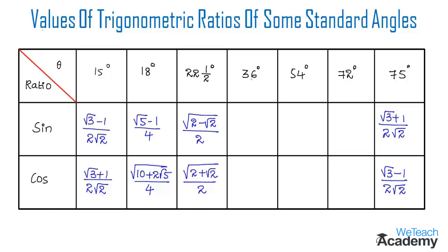Coming to the next standard angle, 36 degrees — we already proved that sine 36° = √(10 − 2√5) / 4, whereas the value of cos 36° = (√5 + 1) / 4. Now let us write the values for the next standard angle, 54 degrees.